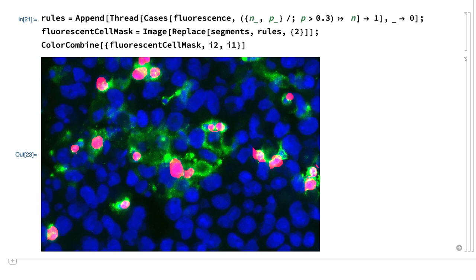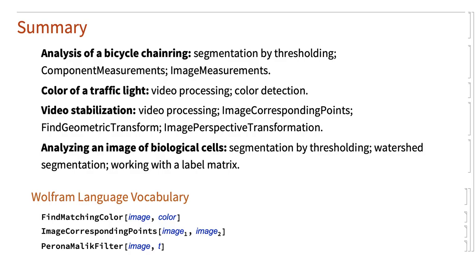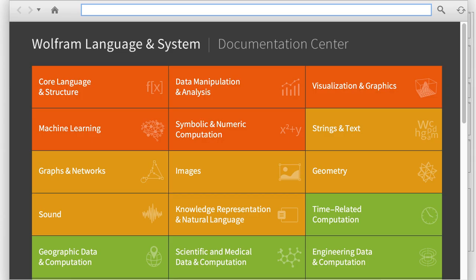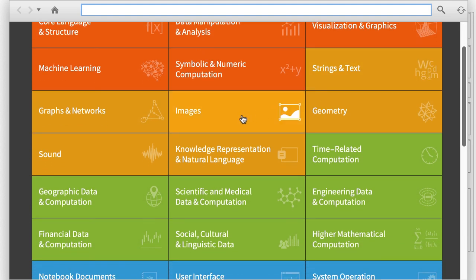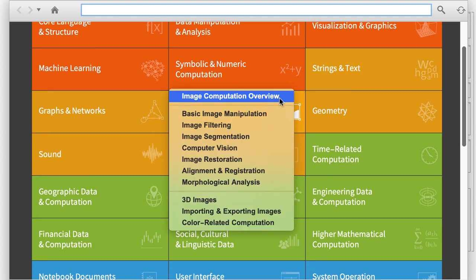That's the end of the examples for this section. This section was primarily a review of topics and methods from earlier sections, although there were a few additional functions. You can find more information about those functions in the Wolfram documentation, and you can find more information about image processing in general by following links from the Images button in the Documentation Center homepage.